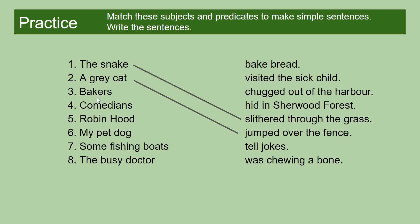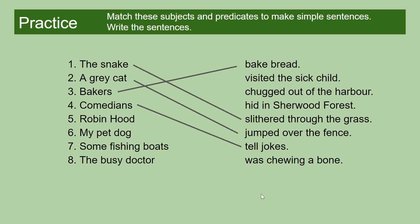Bakers baked bread. The verb is 'bake' and the noun is 'bread.' Comedians tell jokes. The verb is 'tell' and the noun is 'jokes.' Jokes, like ideas, are called abstract nouns because they are nouns you can't touch and hold.